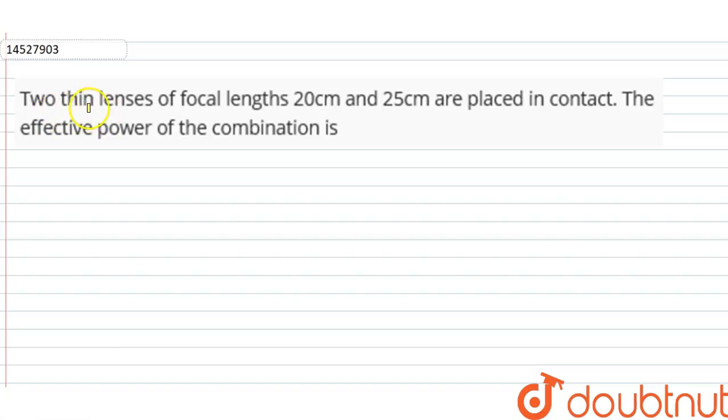So this question tells us that there are two thin lenses. The focal lengths are given as 20 cm and 25 cm. They have been kept in contact. So the effective power of the combination will be what?